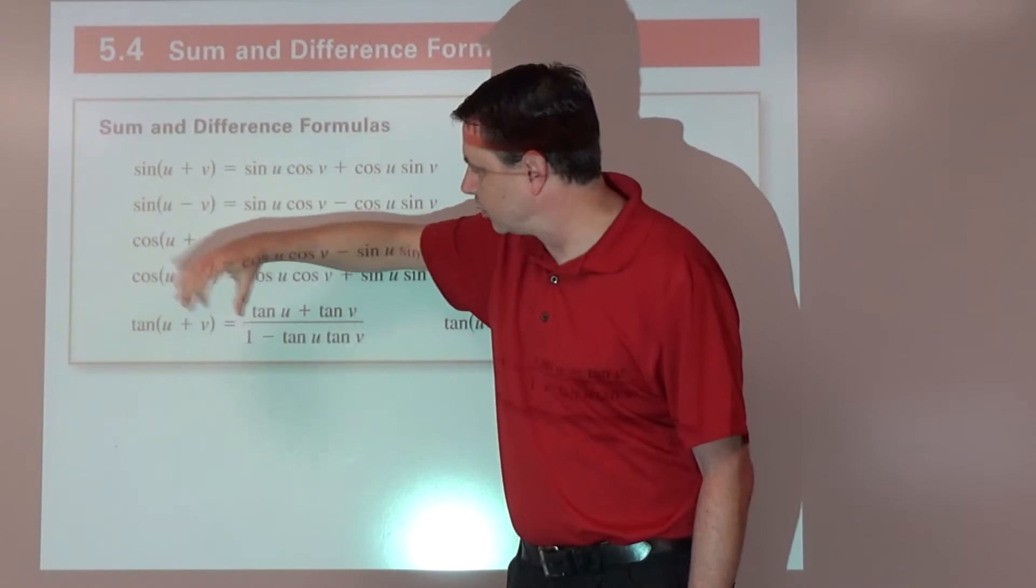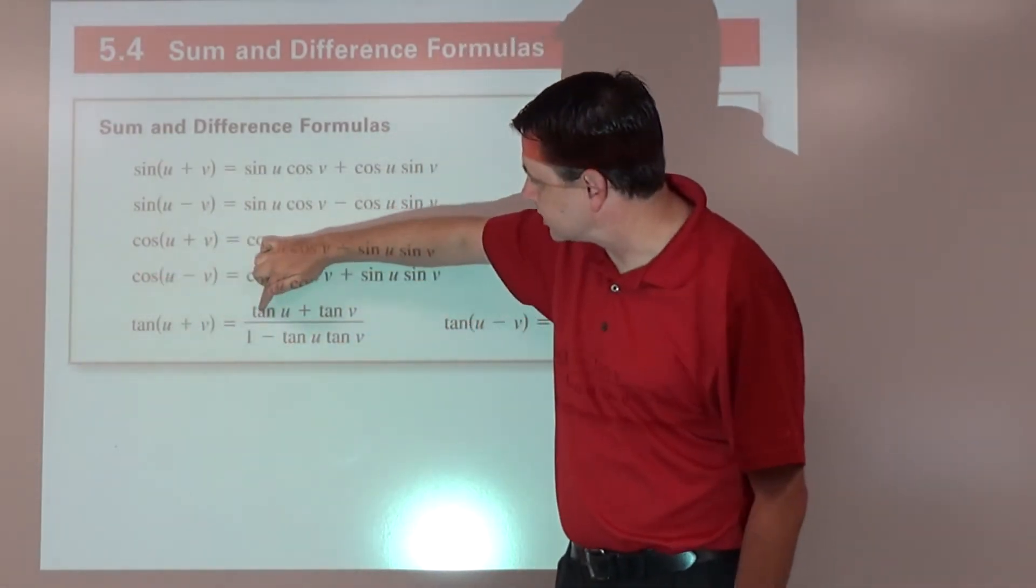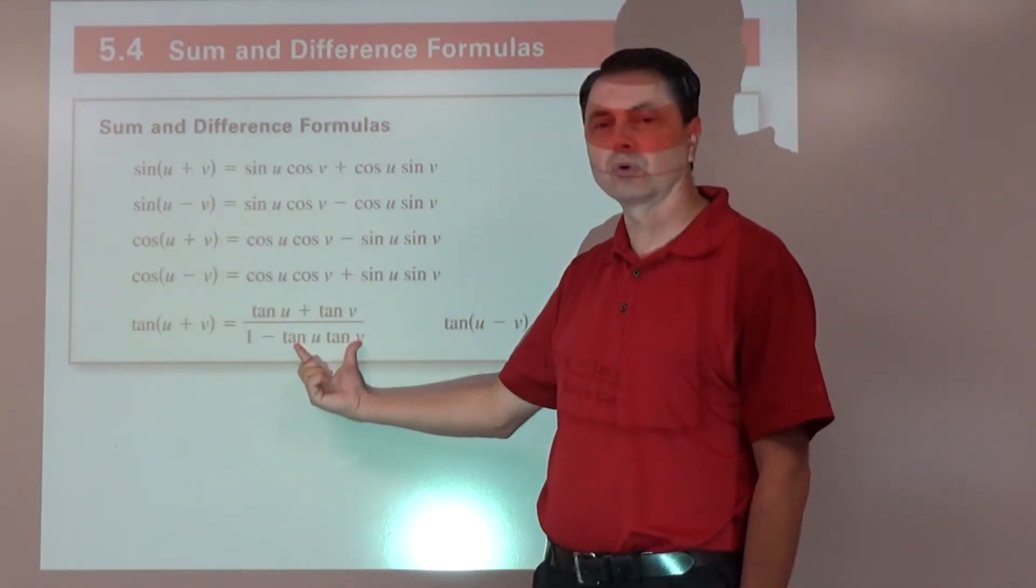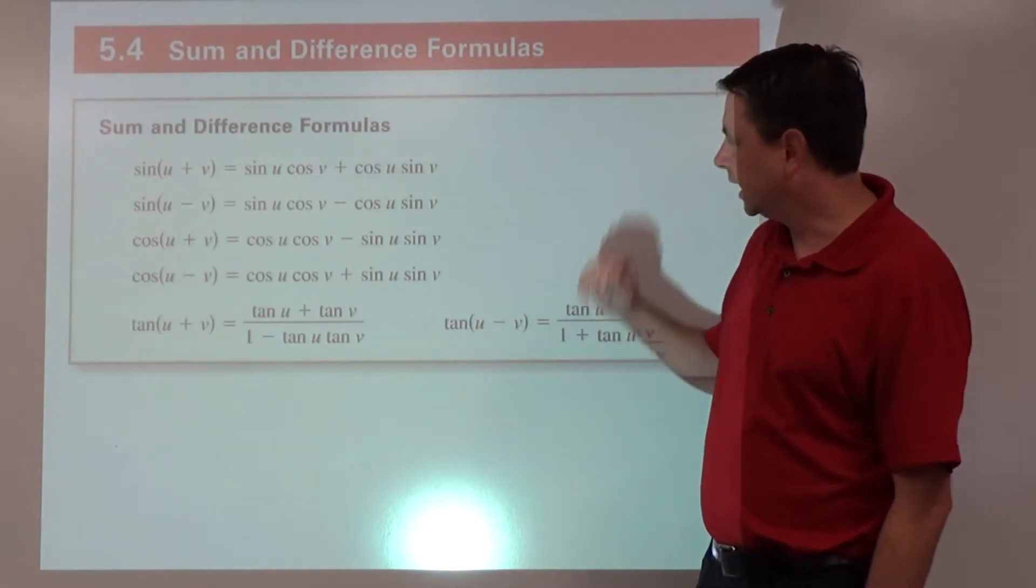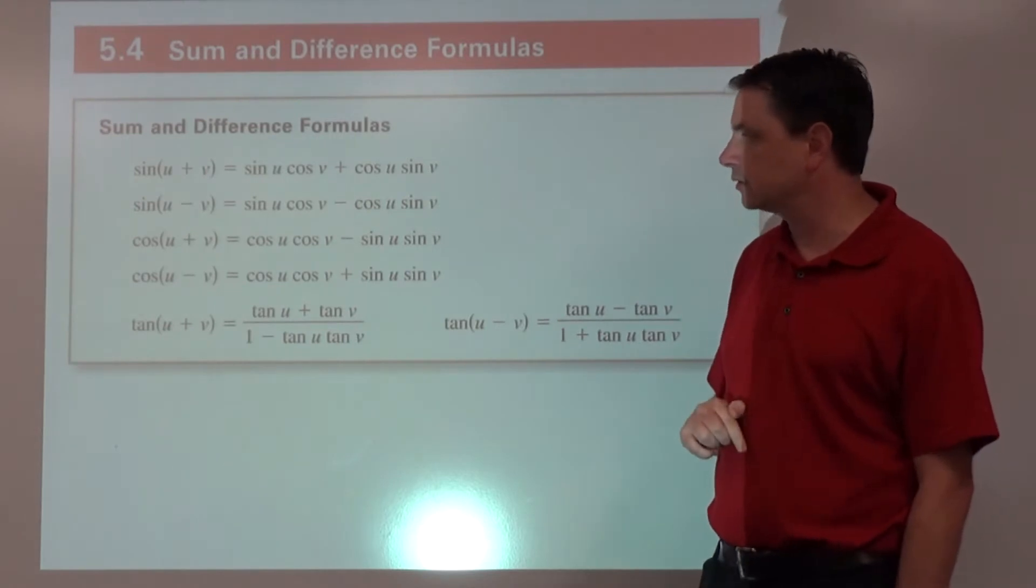And then tangent, a little bit more complicated, it's a fraction. Tangent of u plus v is tangent of u plus tangent of v divided by 1 minus their product of the two tangents. And then we can see if this one's a minus, then that becomes a minus, and that one becomes a plus.